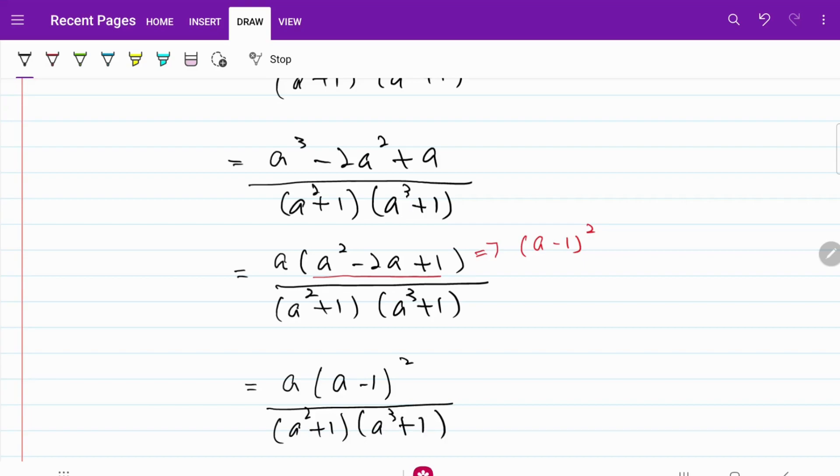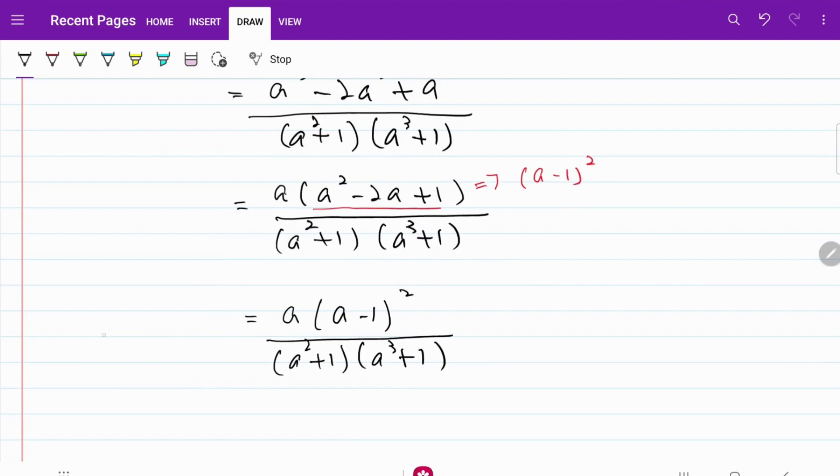I now have a multiplied by a minus 1 squared over a squared plus 1, a cubed plus 1. I'm not sure whether that can be simplified any further, but that's what we end up with when we do A minus B. That's the final expression.